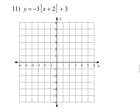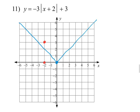Number 11 is absolute value. The original has a minimum at the origin with slopes of 1 on either side. Inside we've got plus 2, so we move left 2. The plus 3 outside moves it up 3. We don't just draw two lines though, because there's a negative 3 out front — the negative flips it upside down, and the 3 makes it 3 times as steep. So we go down 3 right 1, down 3 right 1, down 3 right 1 on one side, and down 3 left 1 repeatedly on the other side, giving a steep inverted V shape.